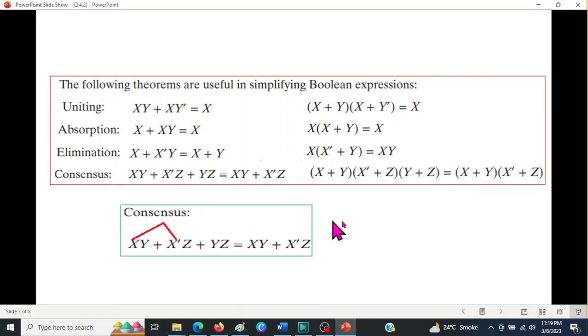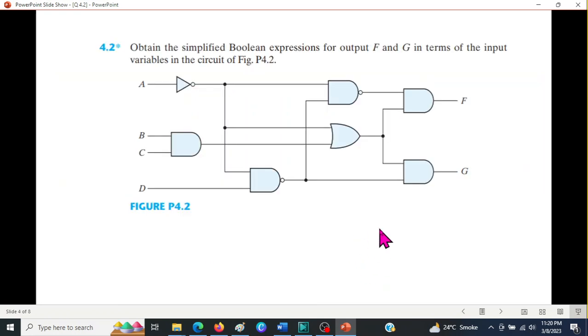The basic concept here is that if you have a term, let's say X, and then there is another term with X', then the third term, if it contains the remaining terms Y and Z, then this term will be equal to 0. As shown here, you can see XY + X'Z + YZ equals XY + X'Z. This term YZ is not present at the output.